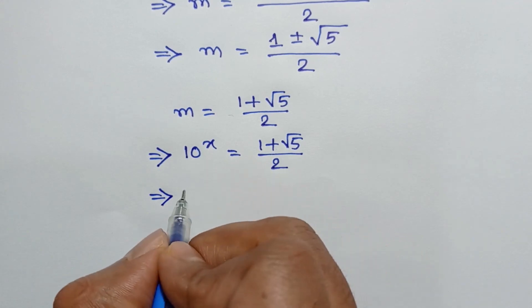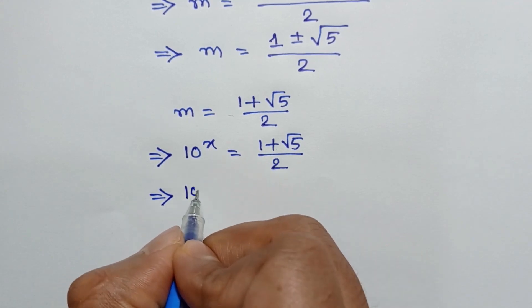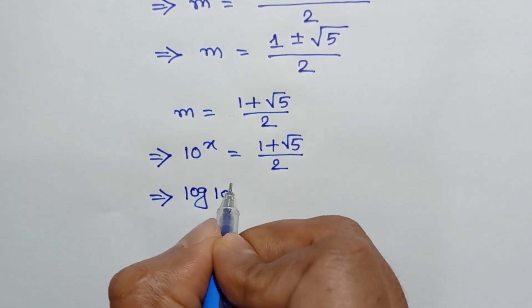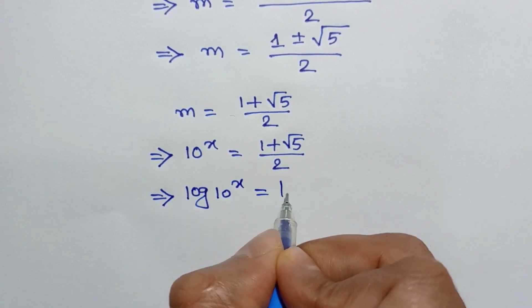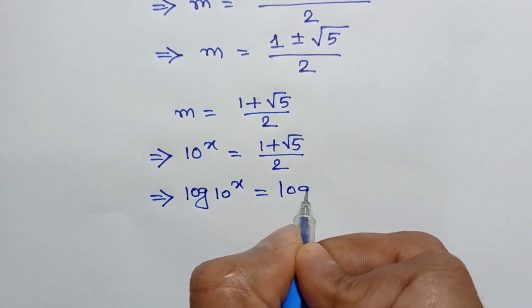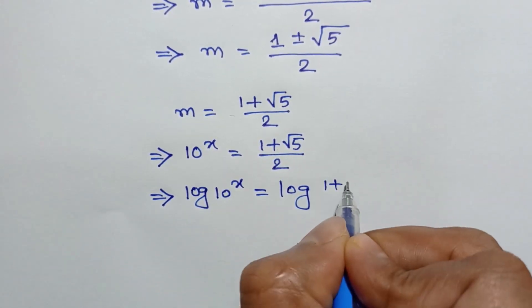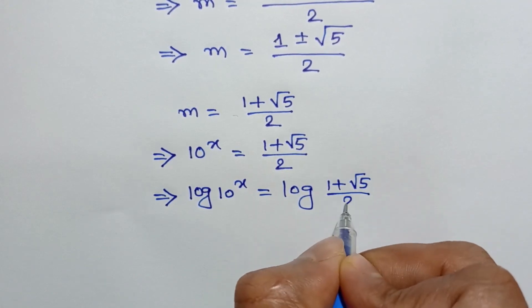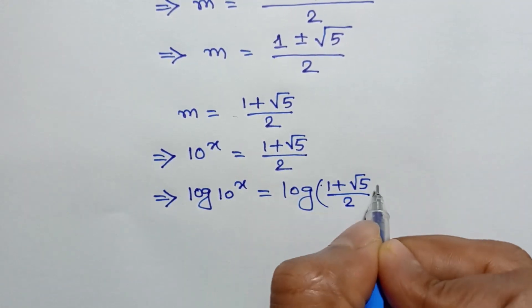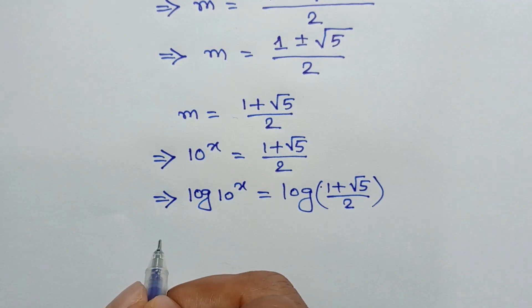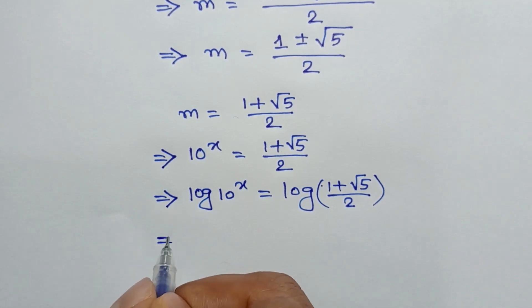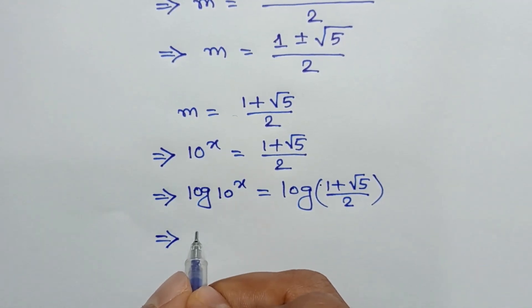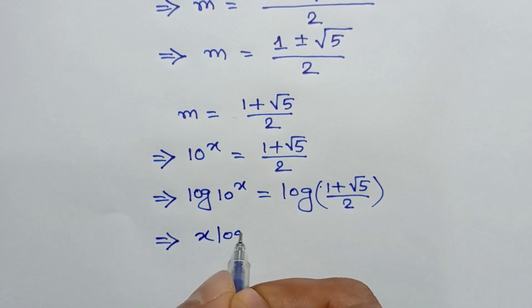Taking the logarithm, 10 to the power x equals 1 plus square root of 5 over 2, which gives x log 10 equals log of 1 plus square root of 5 over 2.